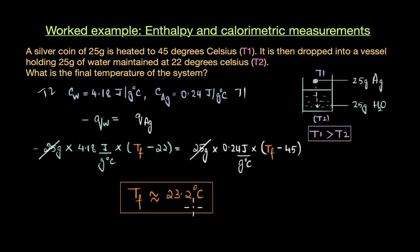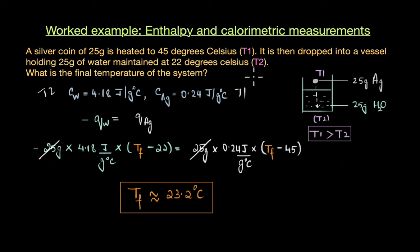The final temperature Tf of 23.2°C is indeed closer to the initial temperature of water, which is 22°C, as compared to the initial temperature of silver, which is 45°C. This is simply because of the huge difference in the specific heat capacity of these two substances.